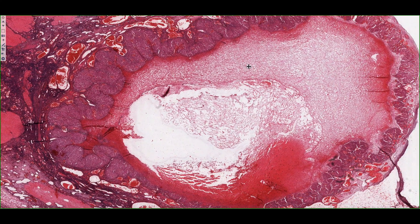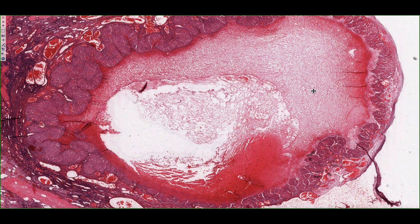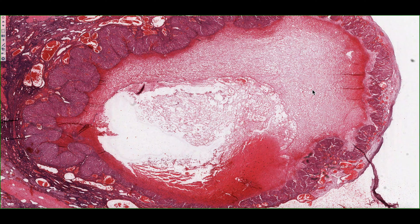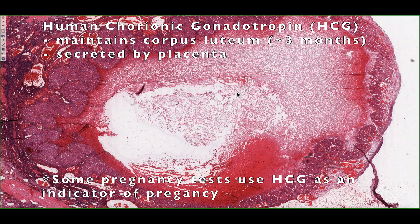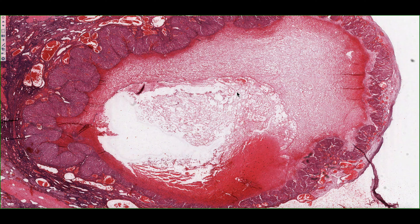However, if pregnancy does occur and we have fertilization of an egg that implants on the uterine wall or endometrium, the placenta itself is going to secrete a hormone called human chorionic gonadotropin, which is going to help maintain the corpus luteum for approximately three months. After three months, the placenta is now capable of providing support to the endometrium and no longer needs the corpus luteum to provide that function.